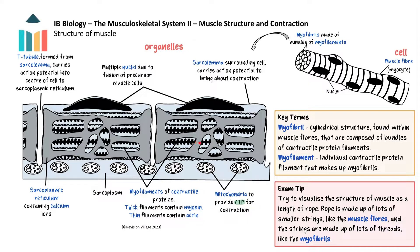The thick filaments contain the contractile protein myosin and the thin filaments contain the contractile protein actin. And finally we have nuclei — in fact many nuclei — muscle fibre cells are multinucleate.